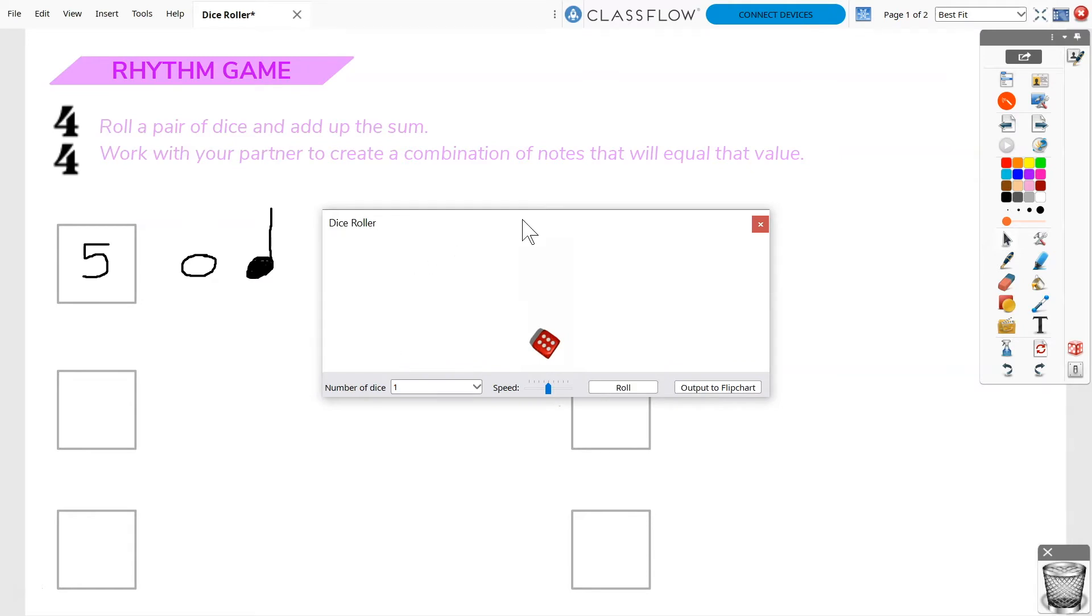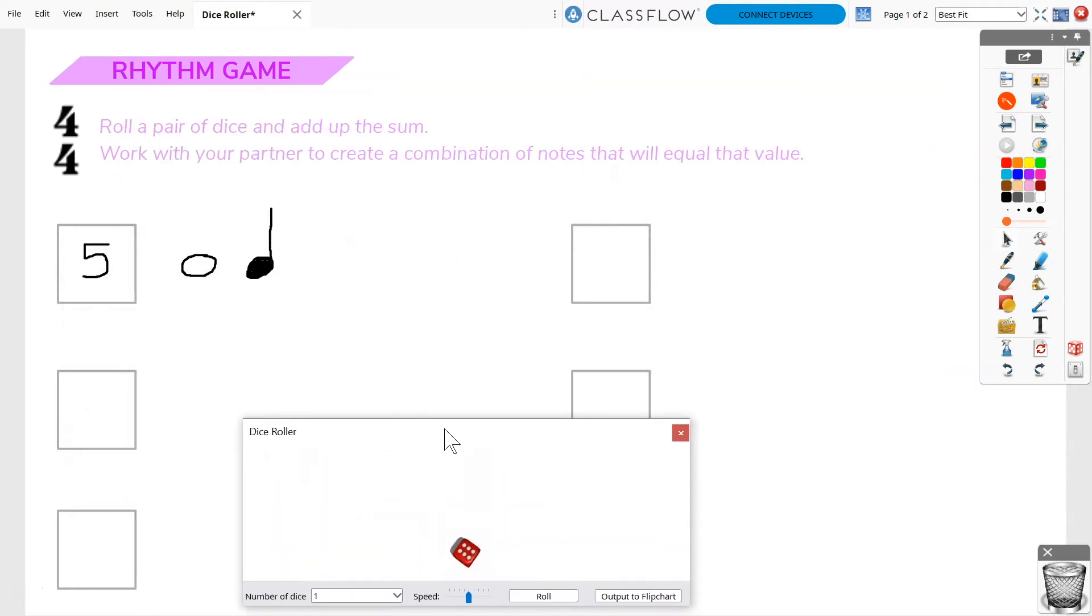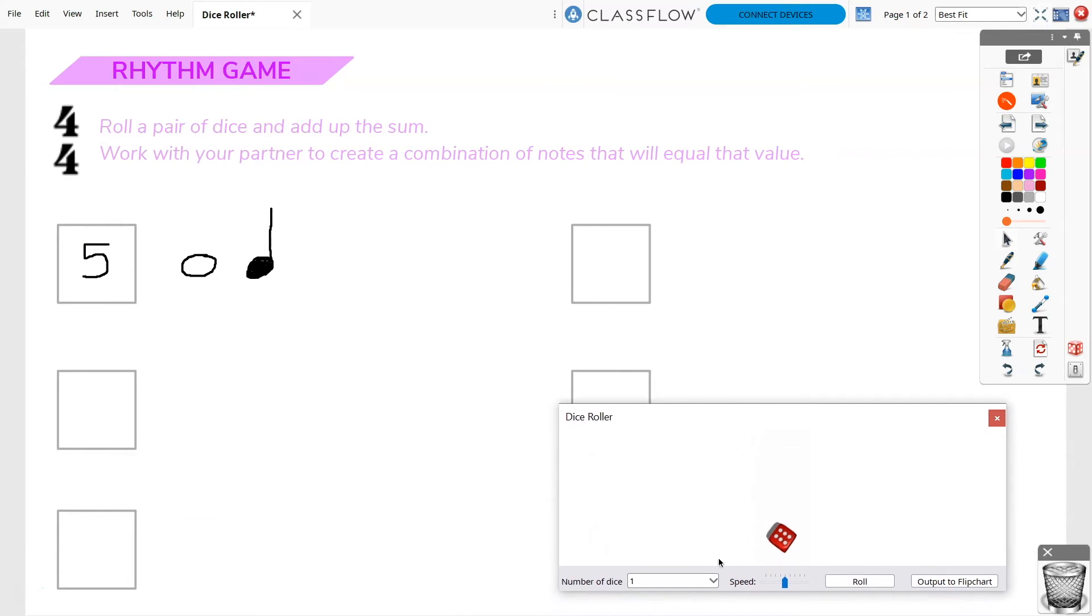When the Dice Roller window appears, you can drag it to reposition and select how many dice you'd like to roll. Choose up to 5.